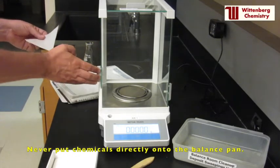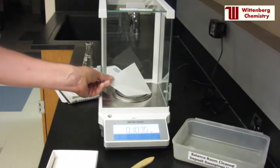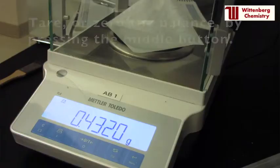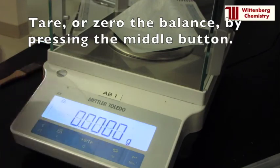Never place chemicals directly onto the balance pan. Tare or zero the balance by pressing the tare button in the middle of the display.